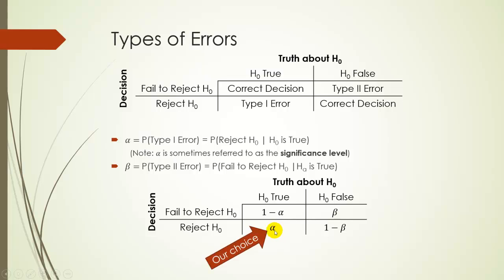1 minus alpha is the probability that you fail to reject H₀ if H₀ was actually true. Similarly, 1 minus beta is the probability you reject H₀ when H₀ is actually false — sometimes called the power of a test. If you take more statistics classes there will be much more on 1 minus beta. Beta itself is largely unknown in practice because H₀ can be false in many different ways, so the probability of failing to reject it is not something you can easily calculate.